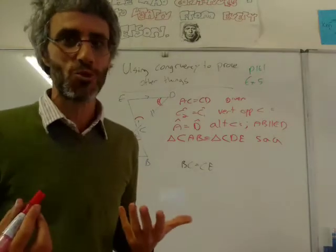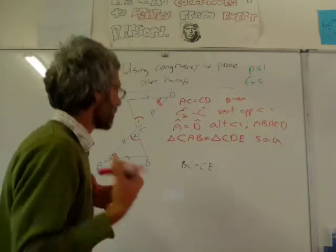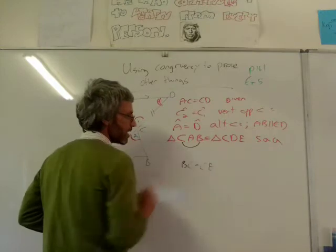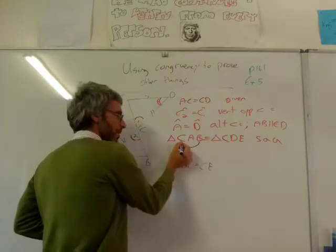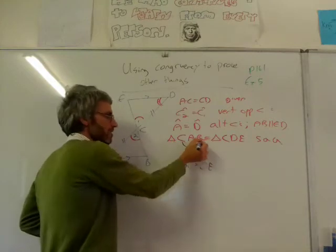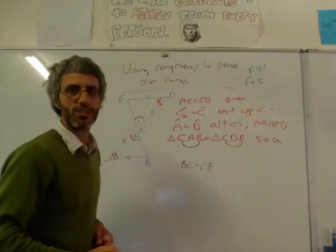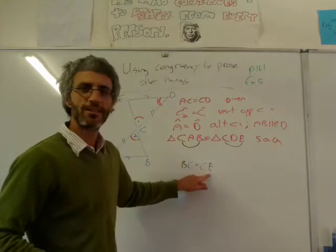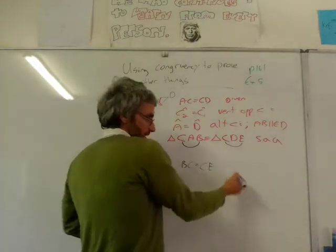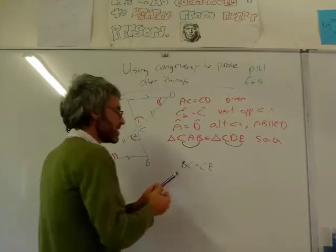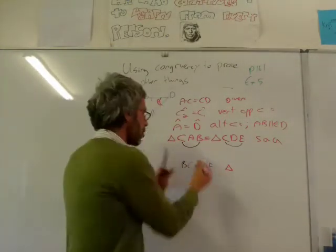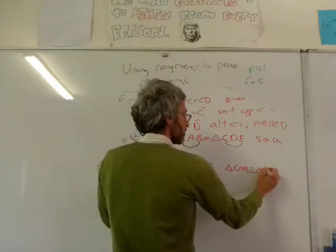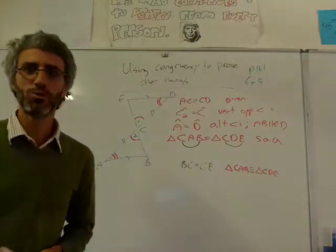They didn't ask me to prove congruency, but I proved congruency. Now, if I proved congruency, I can say that line BC is equal to CE - connecting the first and third letters on the left triangle, I must connect the first and third letters on the right triangle. The reason is triangle CAB congruent to triangle CDE. That's just what we wanted to prove. For the next part, they also want to prove ED equals BA, which follows directly from the same congruency - DE and ED are the same thing.